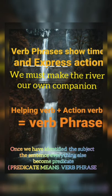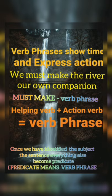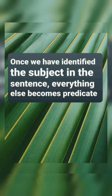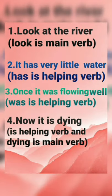Predicate means verb phrase. In 'We must make the river our own companion,' 'must make' is the verb phrase. Except for the subject, the verb phrase shows time and expresses action. The verb phrase includes helping verbs and action verbs. Let us identify the main verb as well as the helping verb and verb phrases.